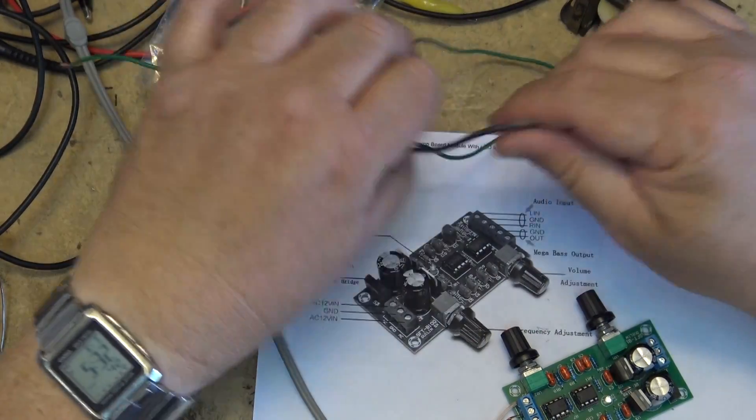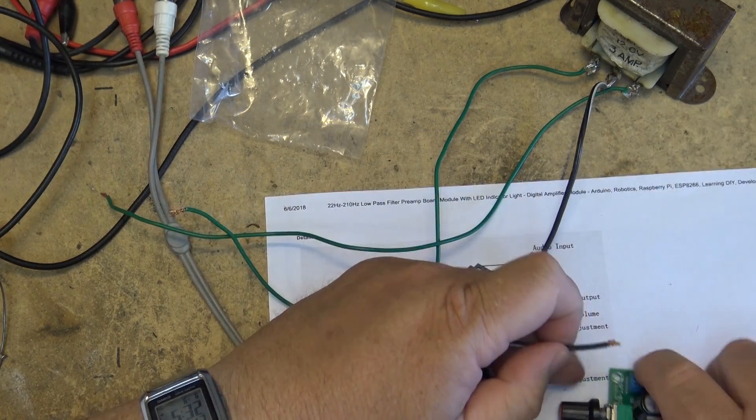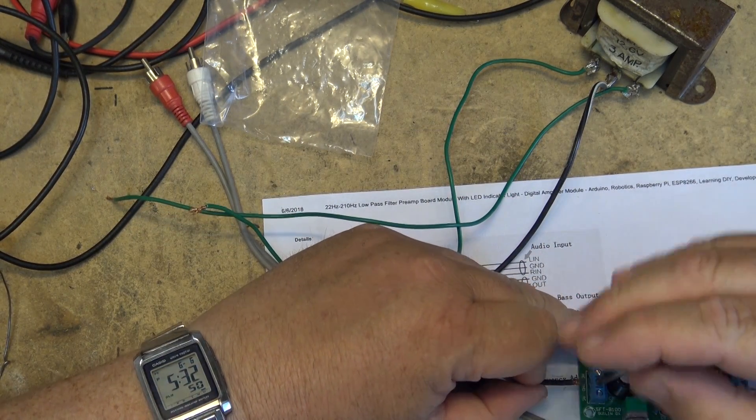Now we need to connect power. We have our center taps for the transformer that's going to go to the center pin here, the ground, and then the two AC inputs. That will power up this unit.